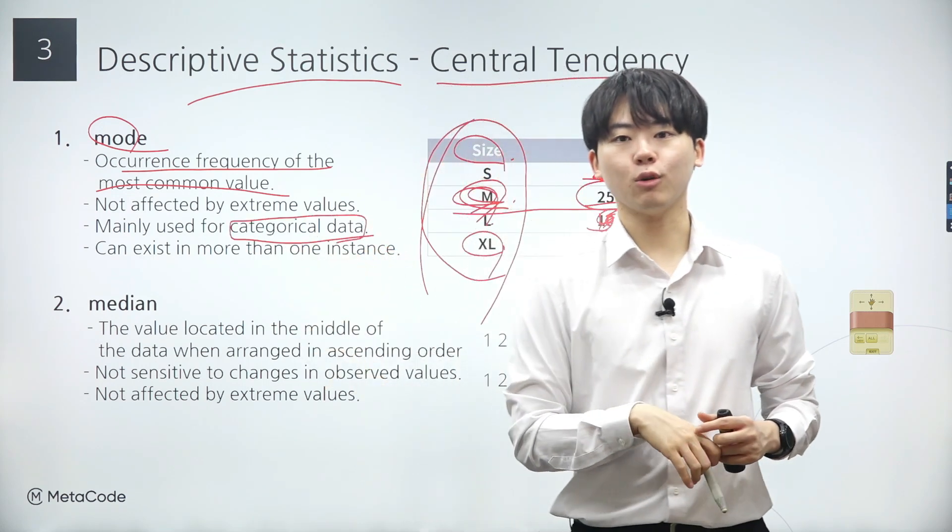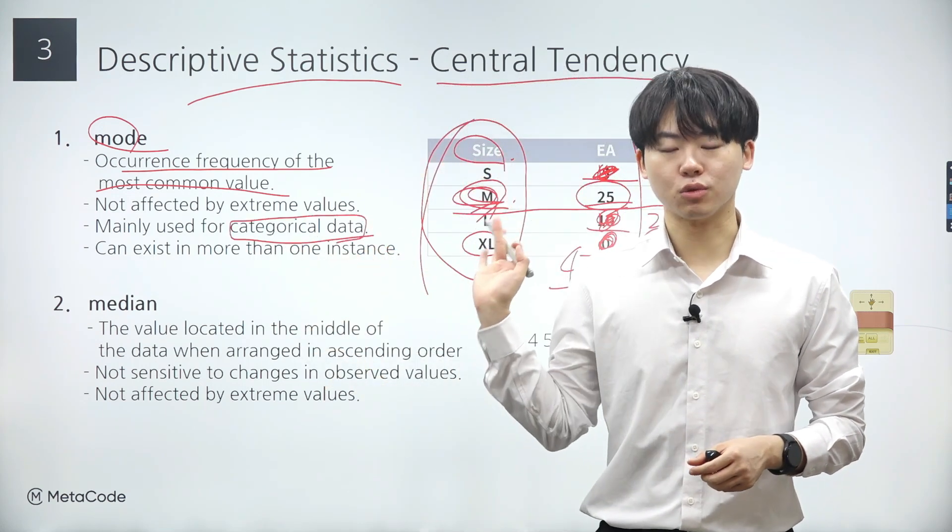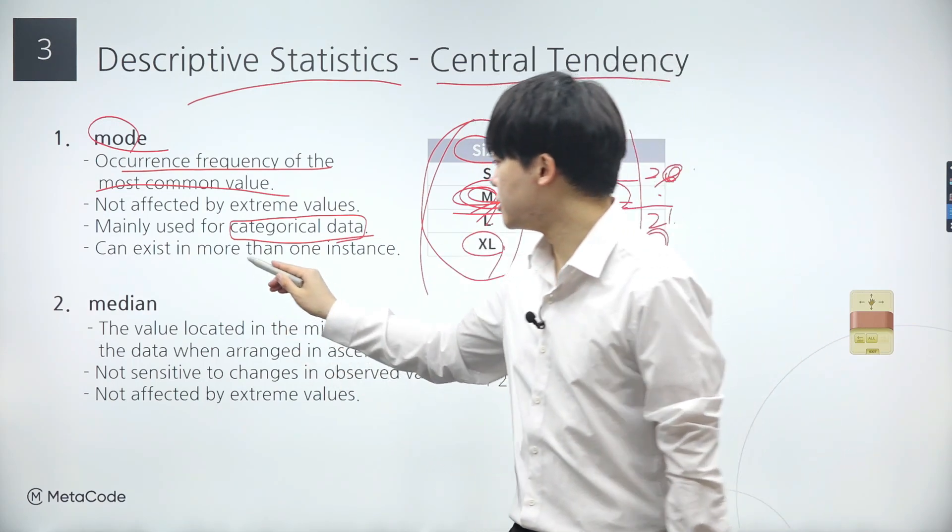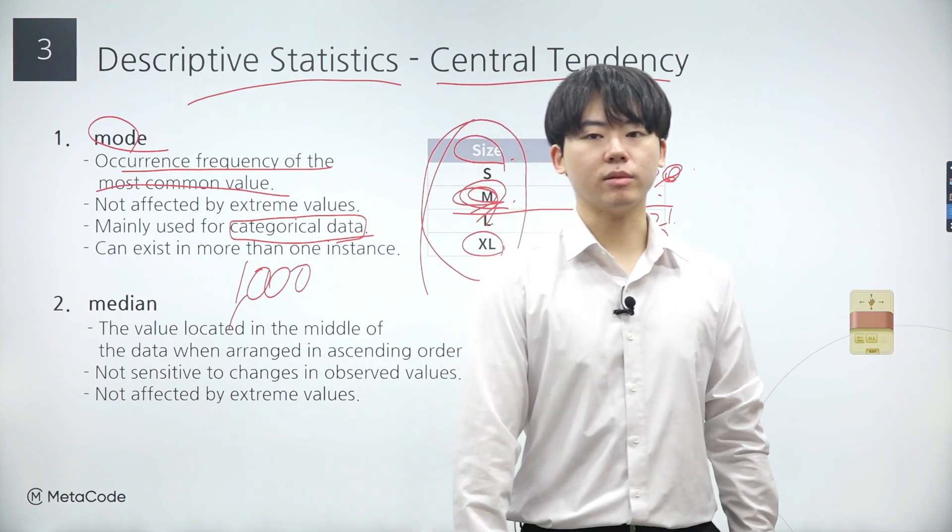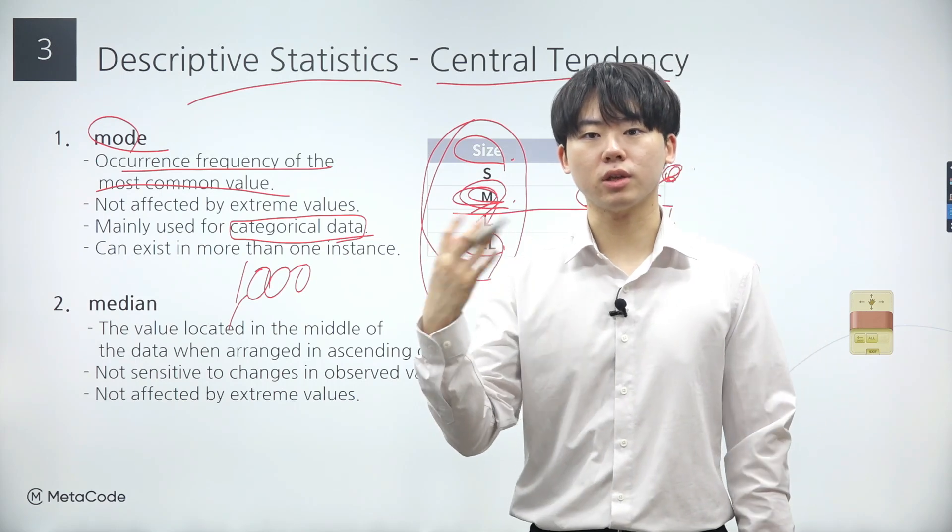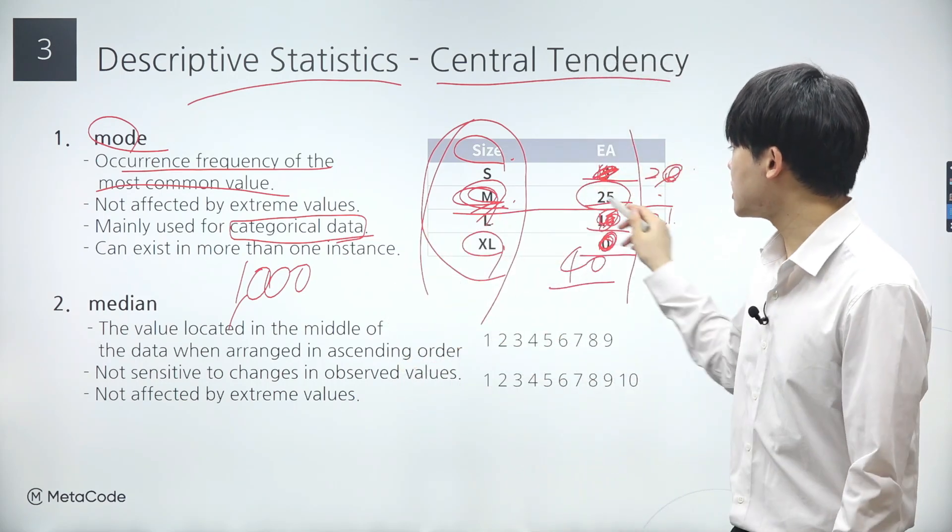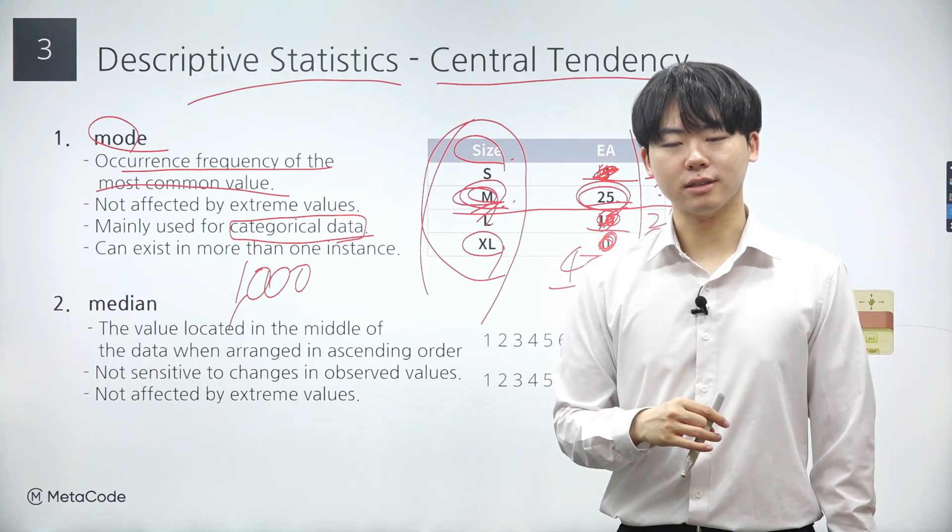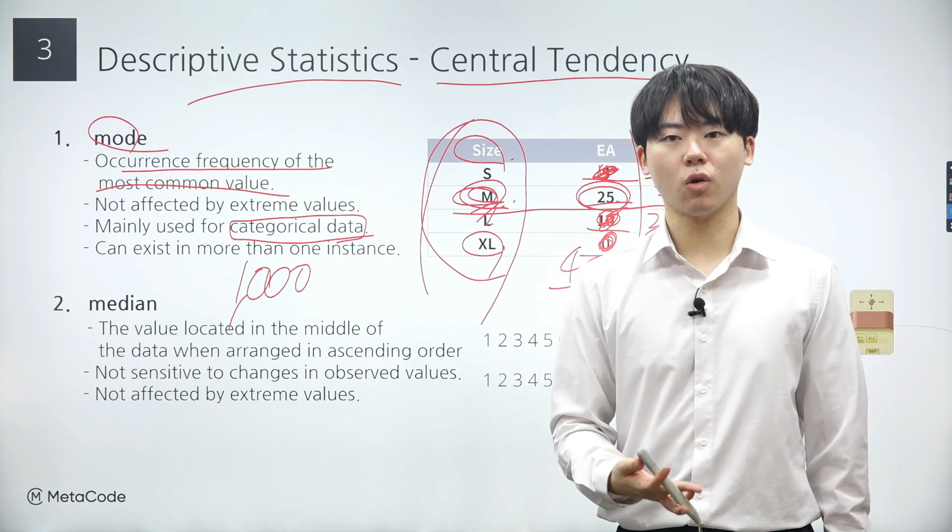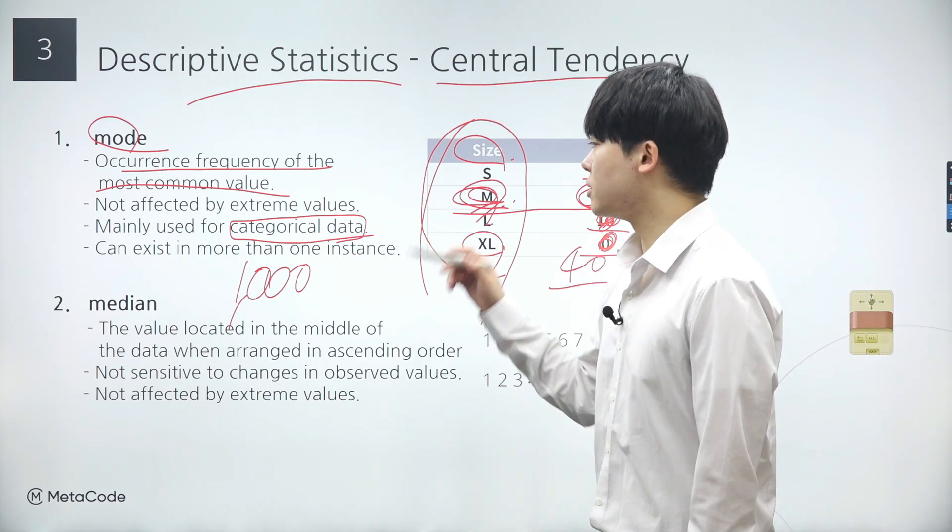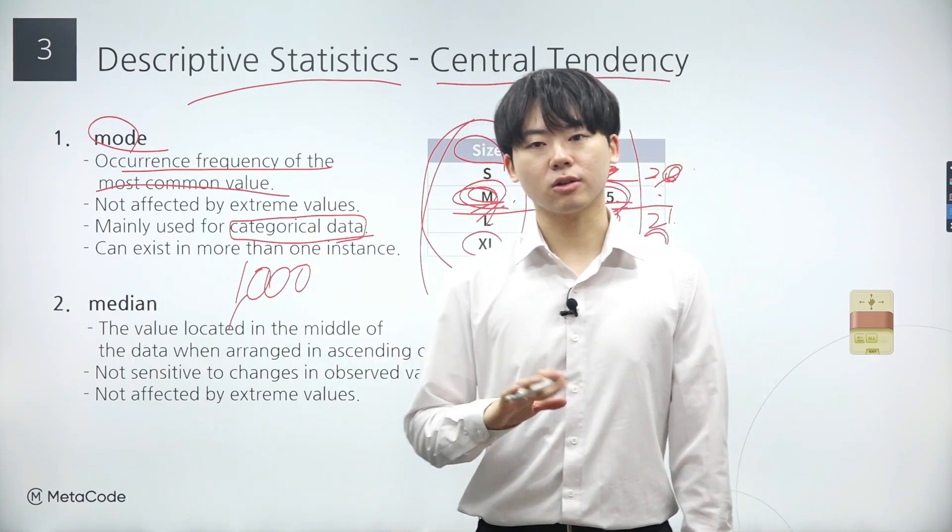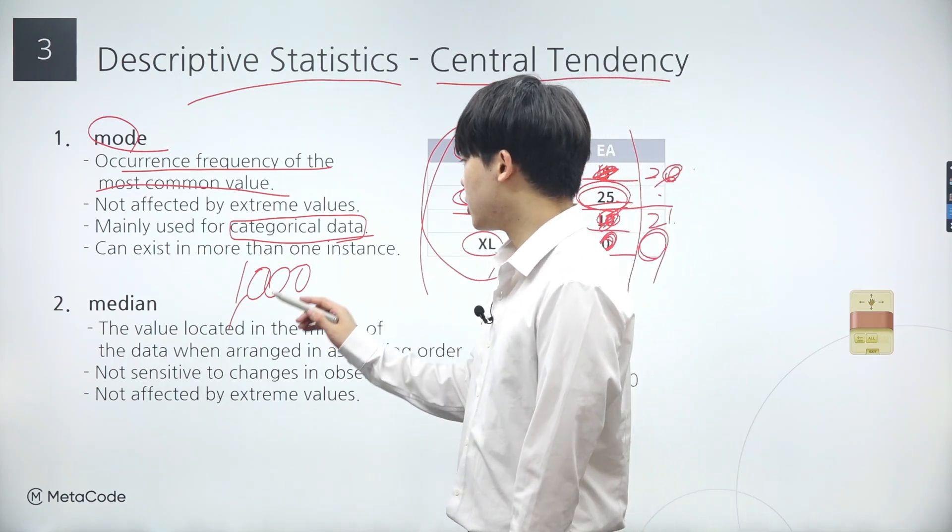As demonstrated in this example, the mode is primarily used for categorical data. Imagine we gathered height data from a sample of 1000 individuals recording measurements to two decimal places and constructed the data table using Excel. However, in this table, it becomes challenging to pinpoint values with significant frequencies like the medium size with 25 sales from the previous example. If we extend our measurements to three or even four decimal places, we'll likely observe lower frequencies for each value. Consequently, the mode becomes more applicable for categorical data sets with a small number of distinct categories.